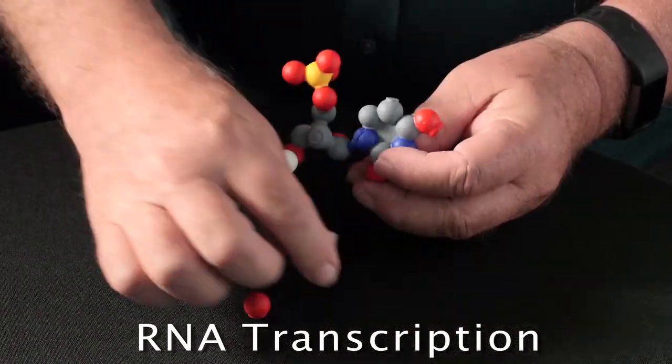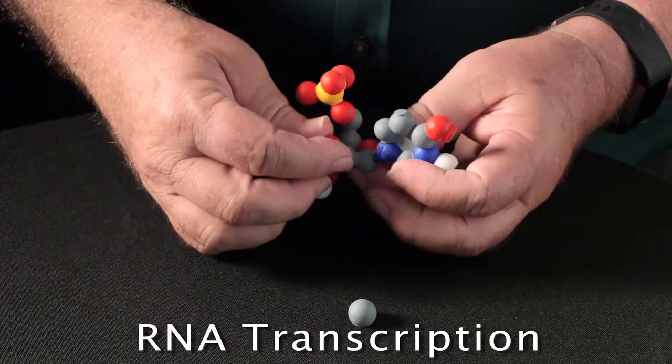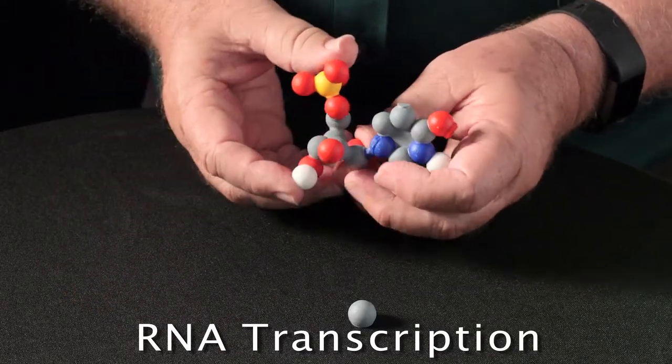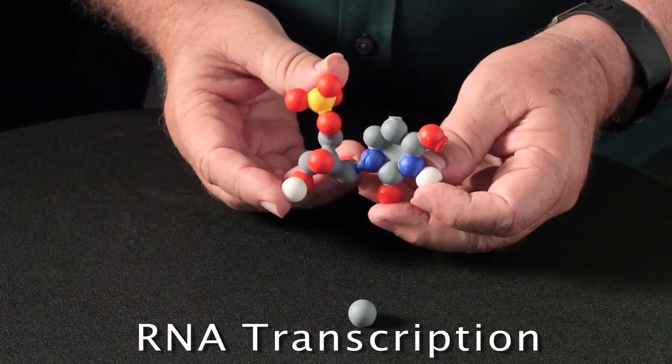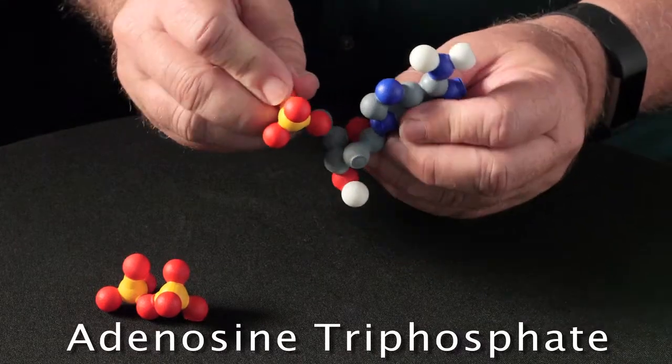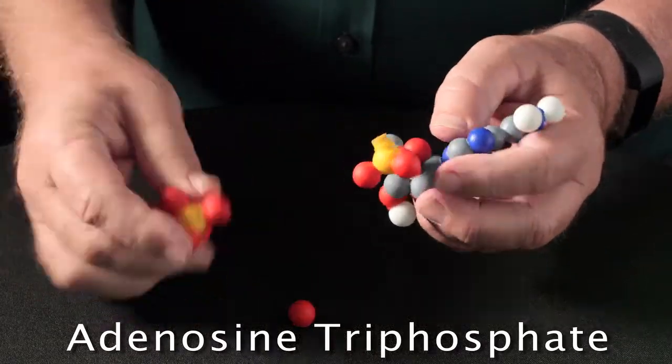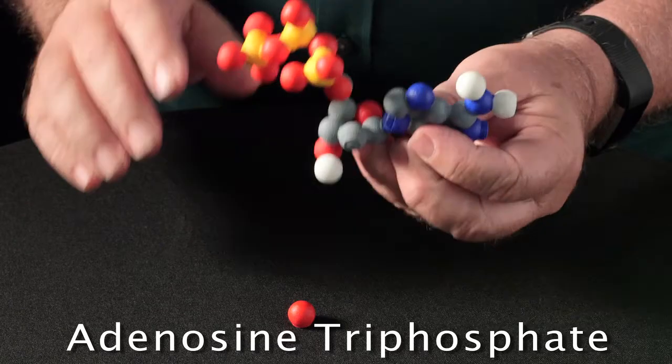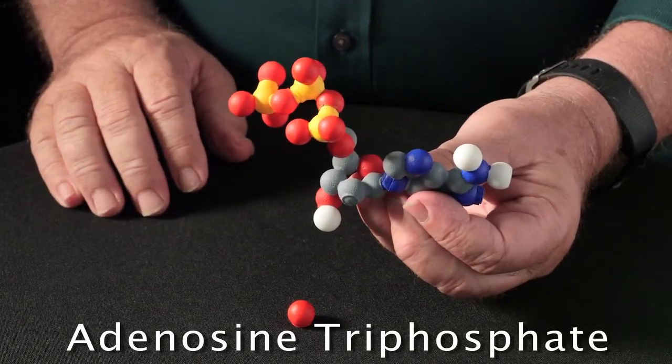The DNA nucleotides can be easily converted to ribonucleotides, which can then be used to model transcription. And deoxyadenosine monophosphate can be easily converted to adenosine triphosphate, or ATP.